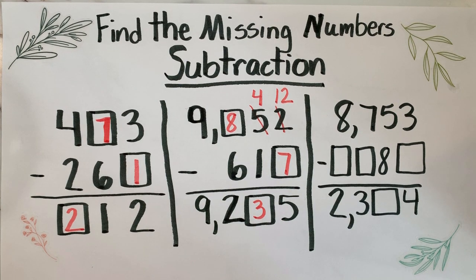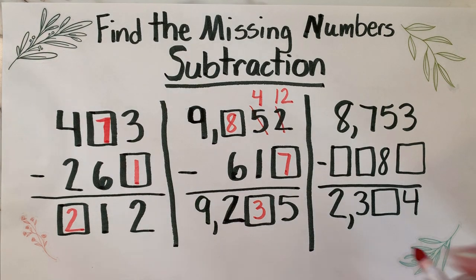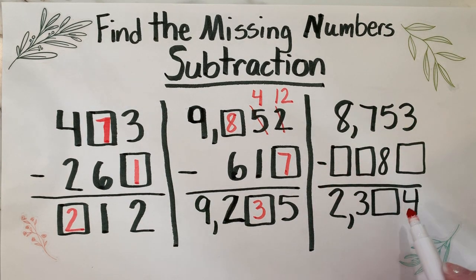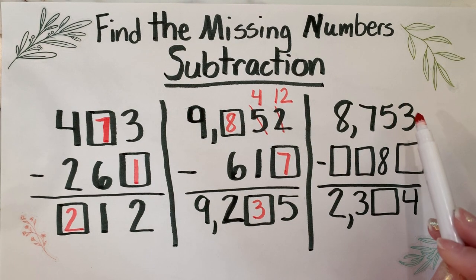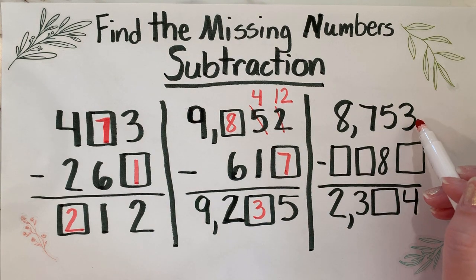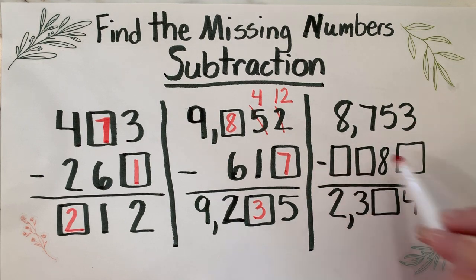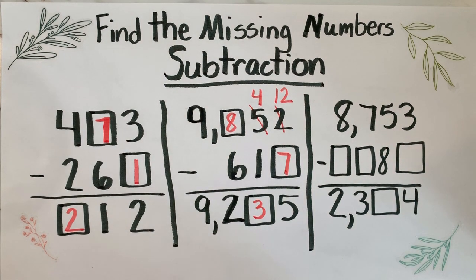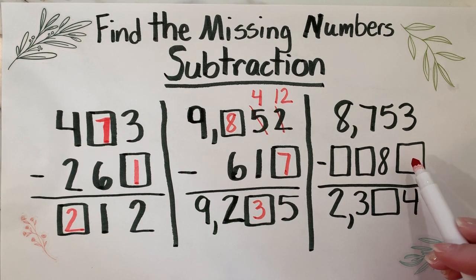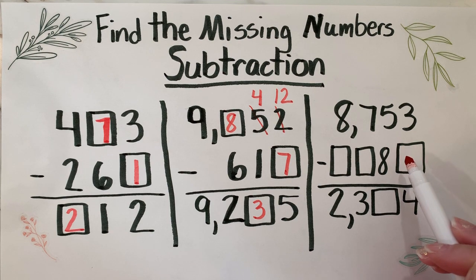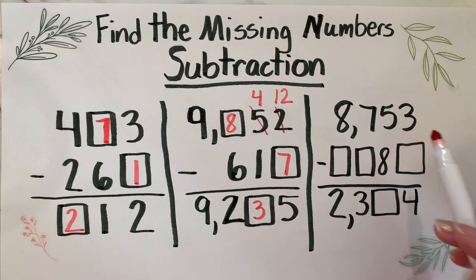All right, you ready for the last one? It's the most challenging yet. So three minus something equals four. Now we've seen this before: the difference is larger than your top number, which we can assume - we can't subtract anything minus three that would get me four, right? That's not going to work. So we've got to regroup. This number has to be a number, this digit has to be a digit larger than the three.